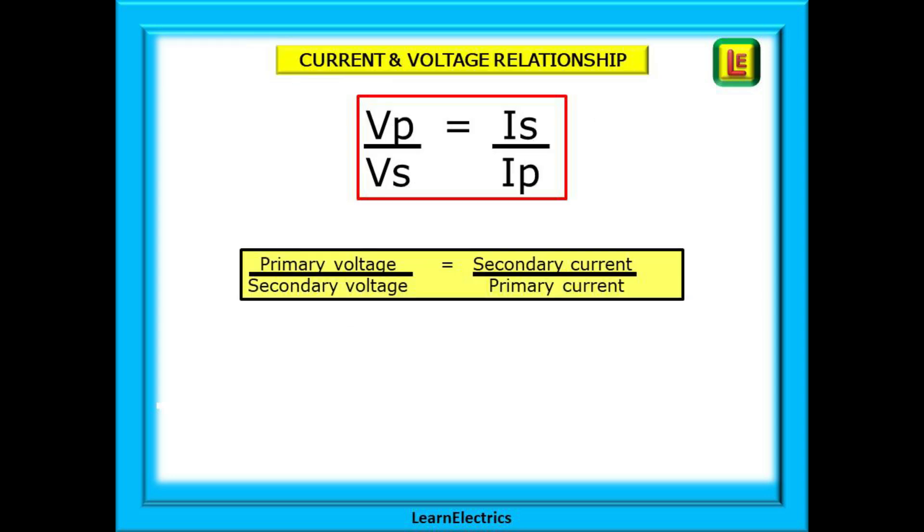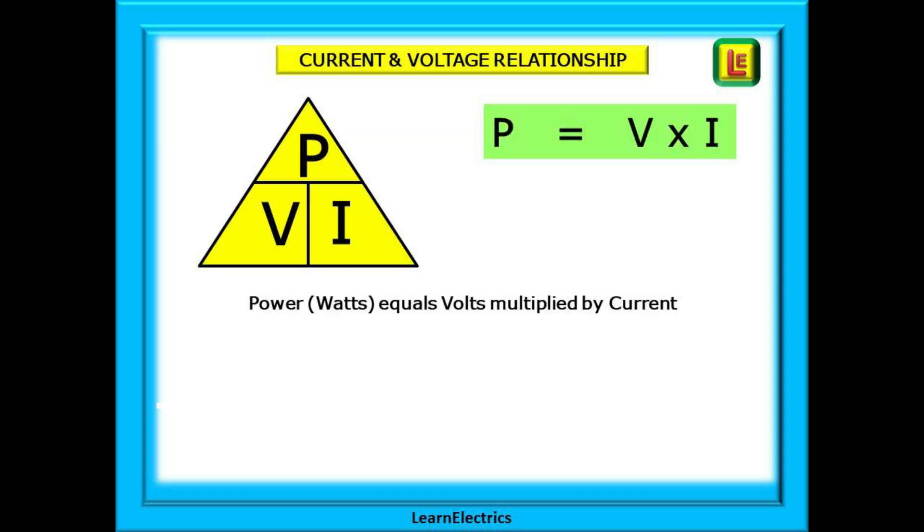Now, we come to the formula that gives us a very important rule. Understand this, and your understanding of transformers will be greatly enhanced. It starts off as shown. The primary voltage divided by the secondary voltage is always equal to the secondary current divided by the primary current.